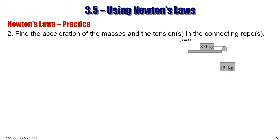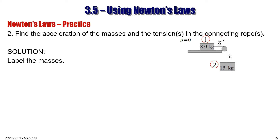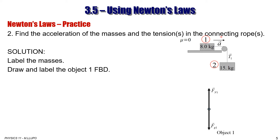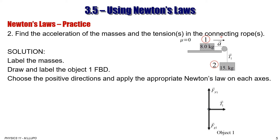The next typical problem involves finding acceleration and tension with a pulley and two masses. Again, mu equals zero, meaning there is no friction between the 8 kg object and the surface. Label the masses and the direction of motion, which is the positive direction and direction of acceleration. For object 1, draw a free body diagram with Fg1 and Fn1, and tension on the right with nothing on the left. Then choose the positive direction and apply the appropriate Newton's law.